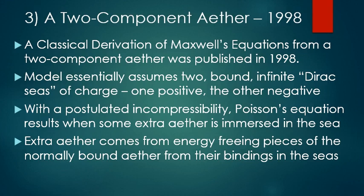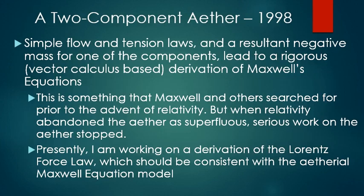A classical derivation of Maxwell's equations from a two-component ether was published in 1998. The model essentially assumes two bound infinite Dirac seas of charge, one positive and the other negative. With the postulated incompressibility, Poisson's equation results when some extra ether is immersed in the seas. Extra ether comes from energy freeing pieces of the normally bound ether from their bindings. Using simple flow and tension laws, and a resulting negative mass for one of the components, leads to a rigorous vector calculus-based derivation of Maxwell's equations — something that Maxwell and others searched for prior to the advent of relativity. Presently, I am now working on a derivation of the Lorentz force law, which should be consistent with the ethereal Maxwell equation model.